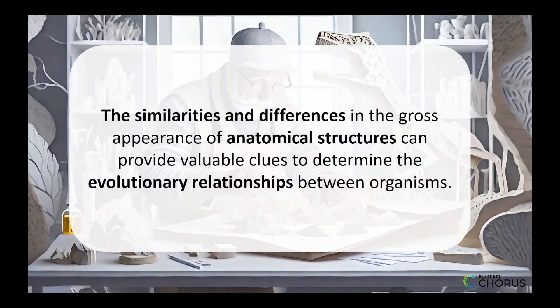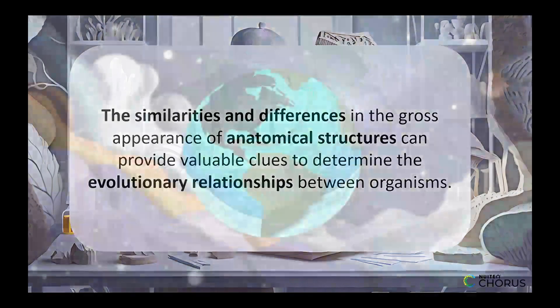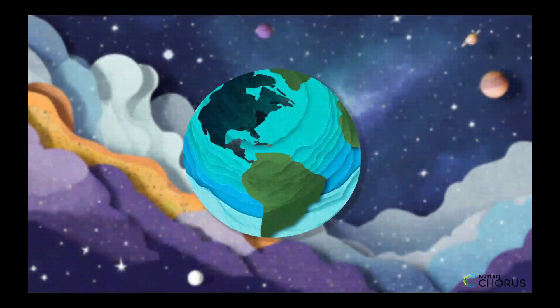Overall, the similarities and differences in the gross appearance of anatomical structures can provide valuable clues to determine the evolutionary relationships between organisms. By studying these relationships, scientists can gain a better understanding of the evolutionary history of life on Earth.